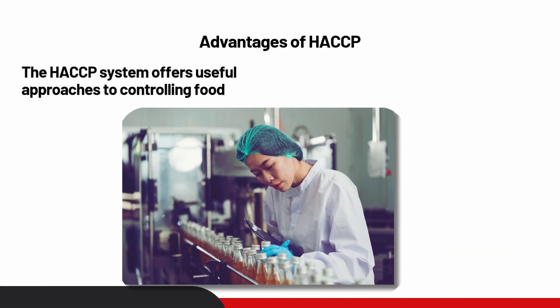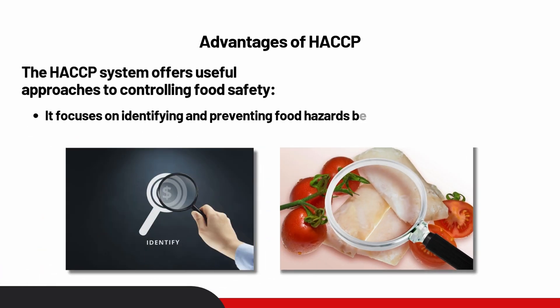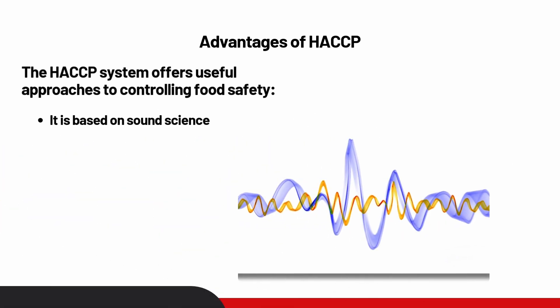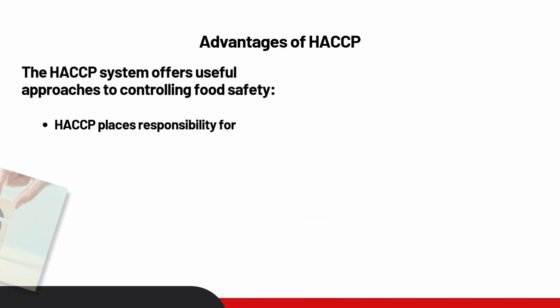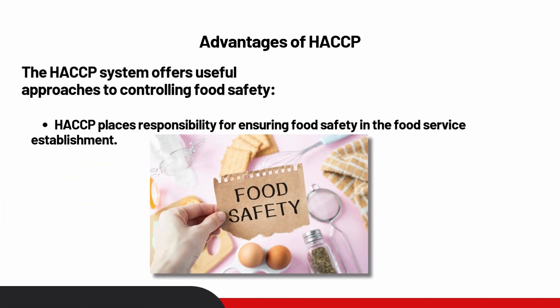Advantages of HACCP: The HACCP system offers useful approaches to controlling food safety. One, it focuses on identifying and preventing food hazards before they occur rather than reacting to them after they have caused a problem. Two, it is based on sound science. Three, HACCP places responsibility for ensuring food safety in the food service establishment.